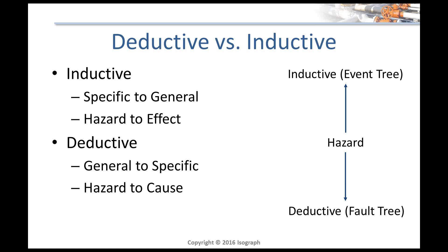Contrast this with a deductive analysis method: deductive reasoning is the opposite, where you start with a general observation and work your way to specific causes. In failure analysis, that means you start with your general hazard or failure mode and then work backwards to individual specific causes that could create that hazardous condition. That relates to fault tree analysis, in which you start with the top event and work your way backwards to figure out the individual failure modes of components that could lead to that hazardous occurrence.